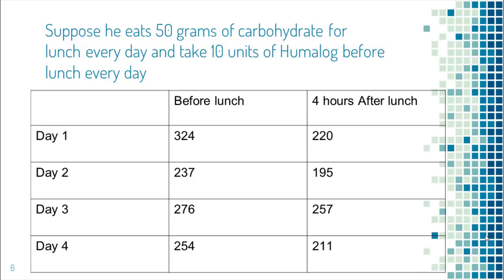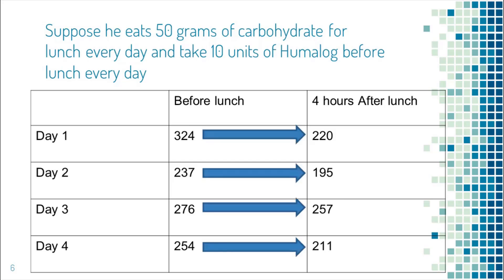Suppose this is another patient who also eats 50 grams of carb for lunch every day and takes 10 units of Humalog before lunch every day. His blood sugar also went down after lunch every day, so again he should take less Humalog for 50 grams of carb. You may ask: what if his blood sugar goes even higher after lunch by taking less insulin, since it was already high? The answer is that he needs to find out why blood sugar was so high even before lunch — does he always eat a big breakfast, or did he forget to take medication or insulin for breakfast? Once the reason is found and blood sugar is no longer high before lunch, it will not be high after lunch.